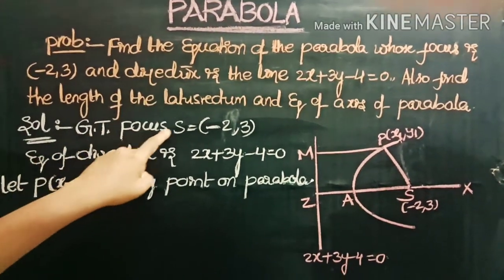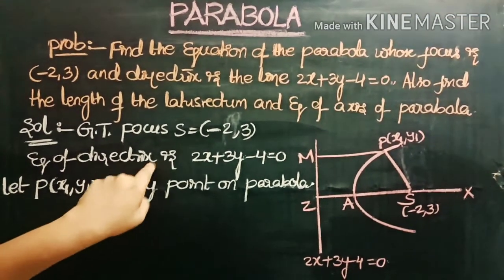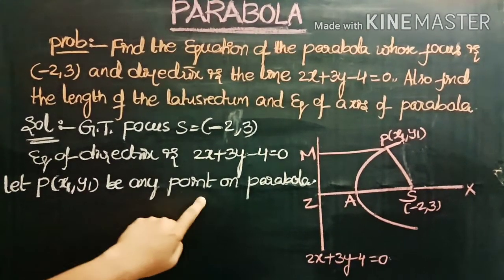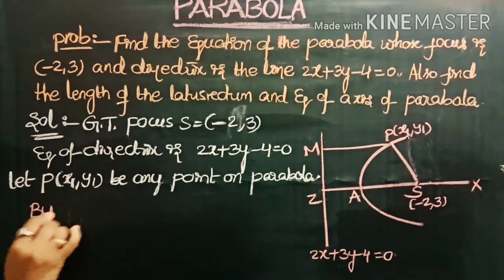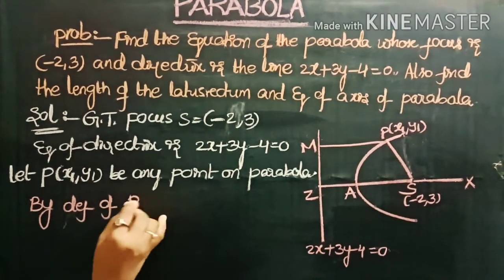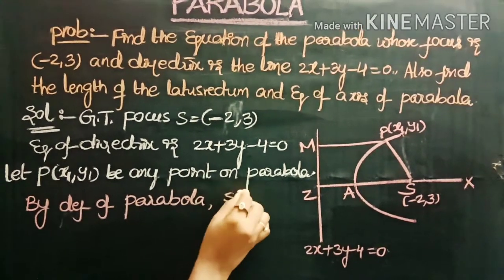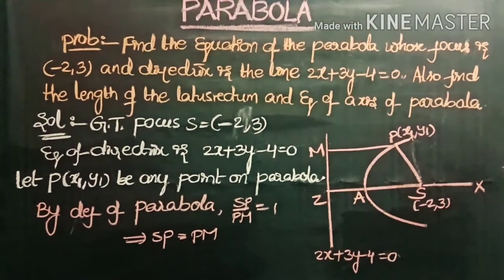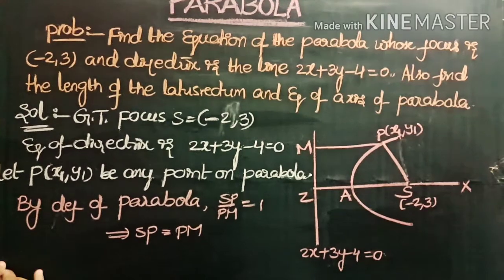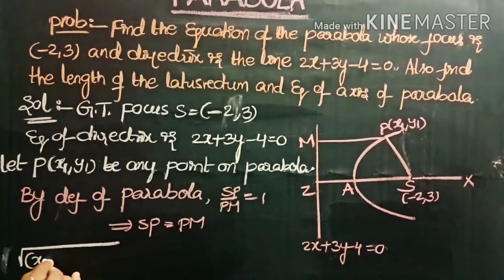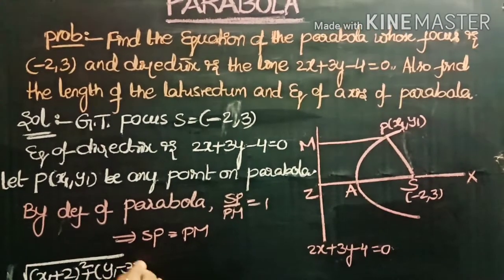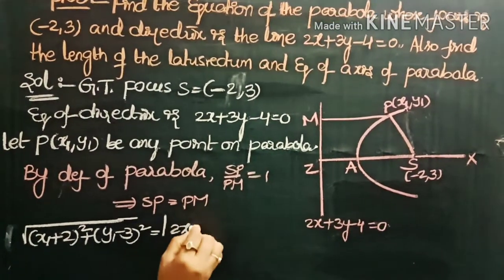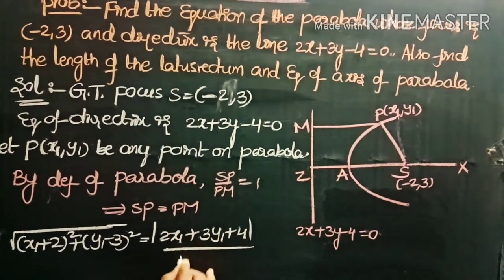Given: focus S = (-2, 3) and equation of directrix: 2x + 3y - 4 = 0. Let P = (x1, y1) be any point on the parabola. By definition of parabola, SP = PM. SP = √[(x1 - (-2))² + (y1 - 3)²] = √[(x1 + 2)² + (y1 - 3)²]. PM is the perpendicular distance from (x1, y1) to 2x + 3y - 4 = 0.